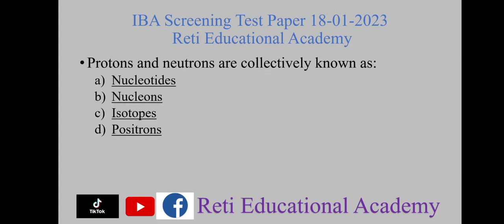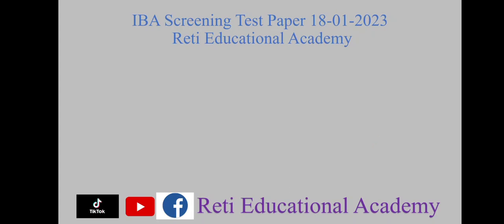Protons and neutrons are collectively known as — A) nucleotides, B) nucleons, C) isotopes, D) positrons. The right option is B) nucleons.